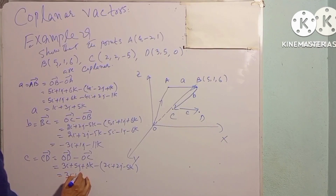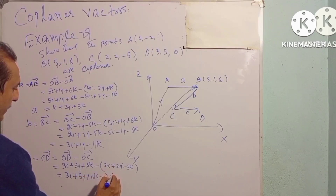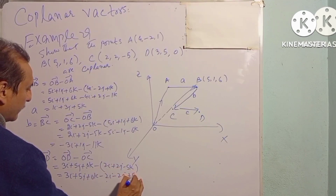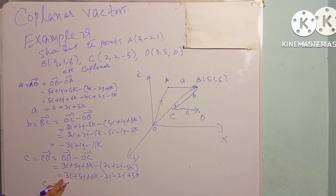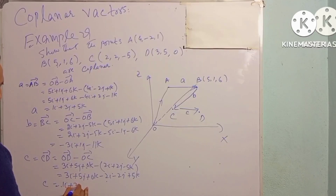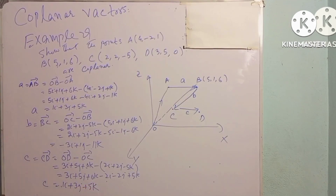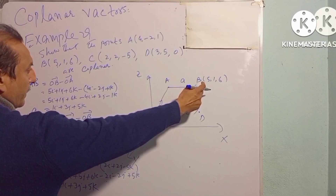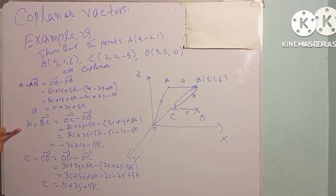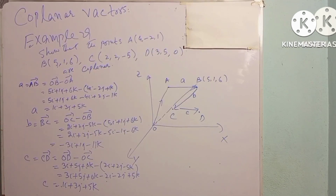Last، vector c یعنی CD vector find کریں گے: OD − OC۔ D کے coordinates سے OD = 3i + 5j + 0k، اور OC = 2i + 2j − 5k۔ تو CD = i + 3j + 5k۔ Now these four points are coplanar if these three vectors are coplanar۔ یہ three vectors کب coplanar ہوں گے اگر ان کا triple product zero آ جائے، تو ہم determinant سے triple product لیں گے۔